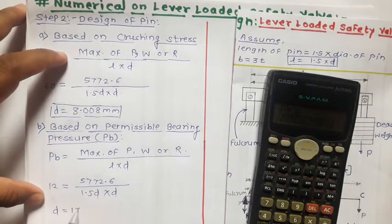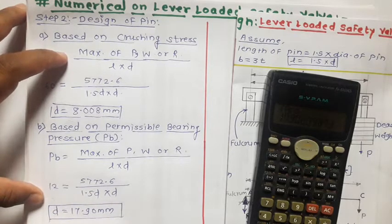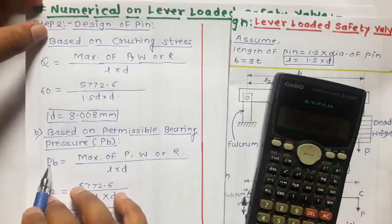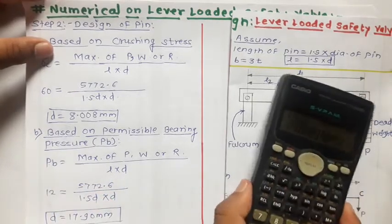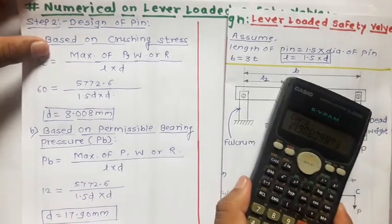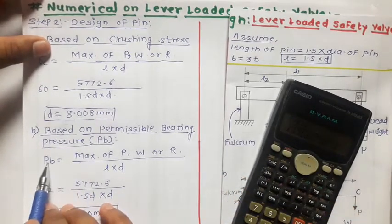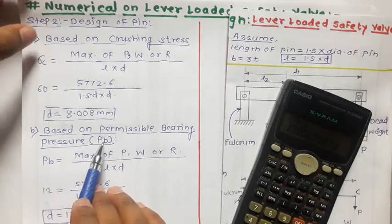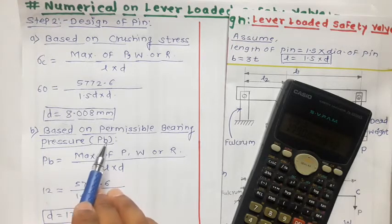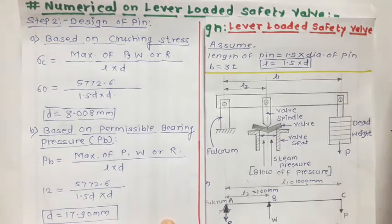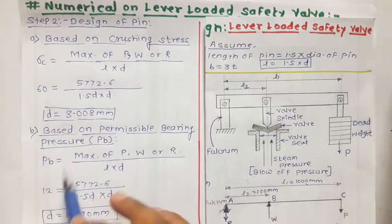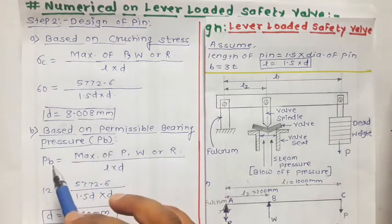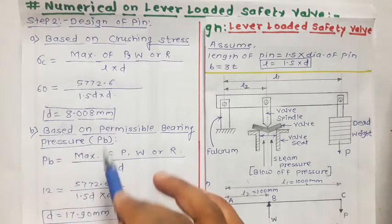After solving, the answer for D is 17.90 mm. This is the diameter of pin based on permissible bearing pressure Pb. Note that the value of Pb is always given in the problem — you do not calculate it. If Pb is not given in a problem, do not calculate the diameter based on permissible bearing pressure, as there is no equation to find Pb independently. Only use this step when Pb is explicitly provided.